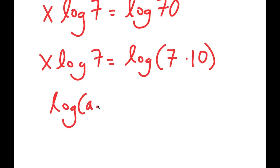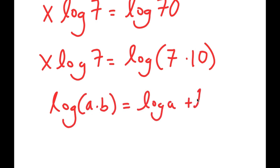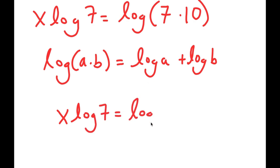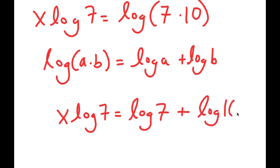Another property of logarithms is that log(a times b) equals log a plus log b. So log of 7 times 10 is going to equal log of 7 plus log of 10.